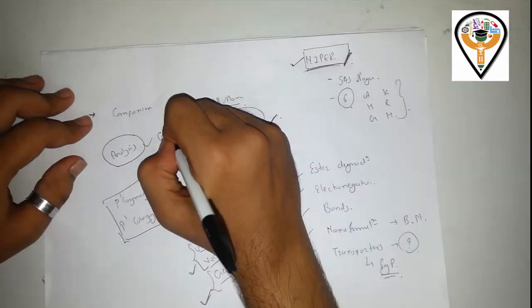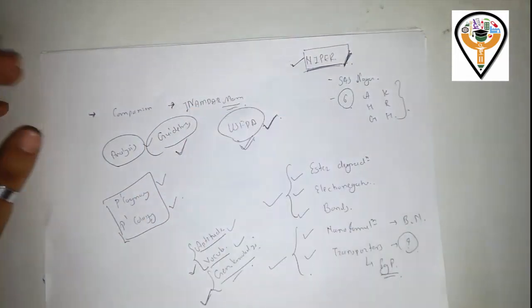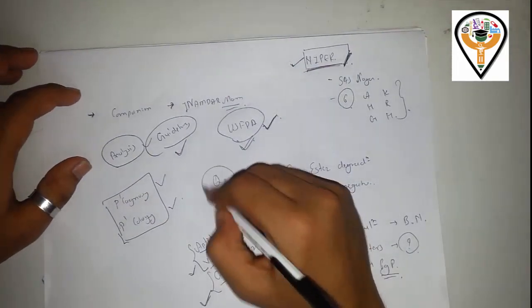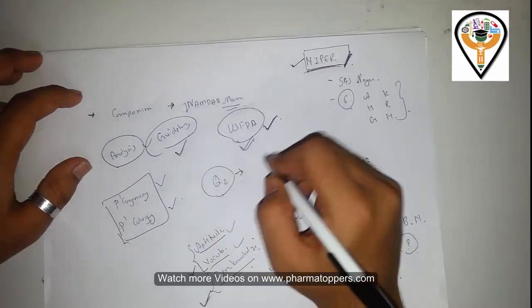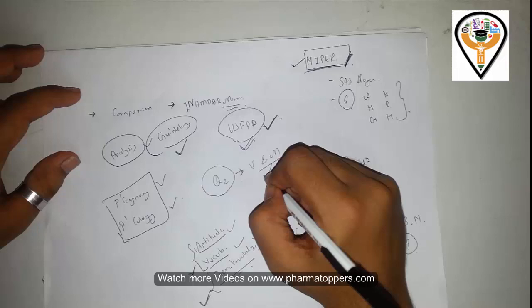Also, in case of analysis, you should go with guidelines—which guideline is there for which subject. For example, Q2 guideline is a quality guideline for the validation and method development of analytical procedures. You should go with these guidelines.